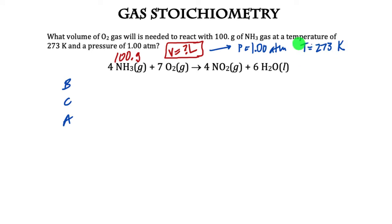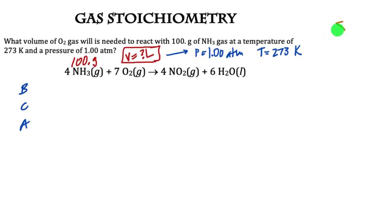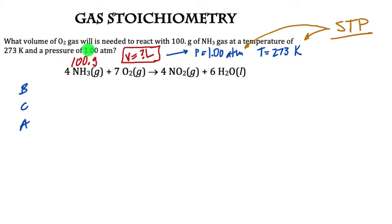All the stuff we did with gases before still holds — make sure temperature is in Kelvin and units match. A quick note: when you have pressure of 1 atm and temperature of 273 Kelvin, these conditions are known as STP — standard temperature and pressure. Some problems will just say 'at STP' instead of giving you those values. We're going to use this to our advantage later, but be careful with the shortcuts.